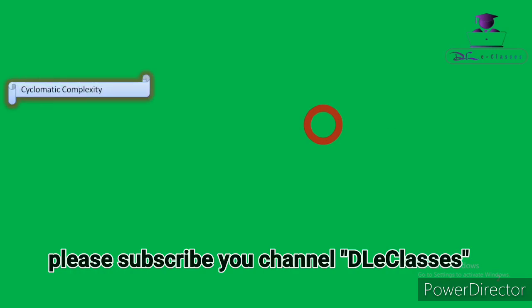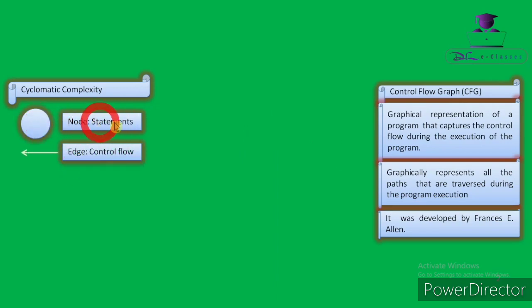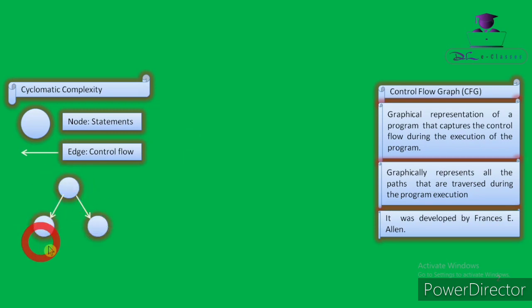Before discussing cyclomatic complexity, we should know what a Control Flow Graph (CFG) is, because cyclomatic complexity is calculated based on the CFG. A Control Flow Graph is a graphical representation of a program that captures the control flow during execution. It graphically represents all the paths traversed during program execution. It was developed by Frances E. Allen. In a CFG, we need two elements: nodes and edges. Nodes represent statements or tasks, and edges represent the control flow between statements or individual blocks of the program.